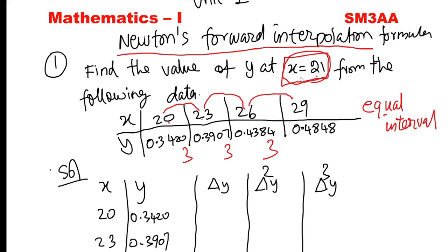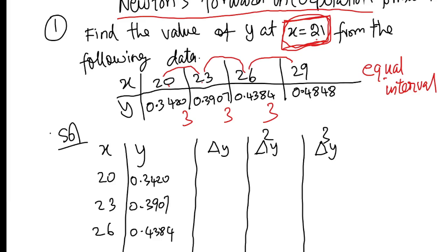Suppose x equals 27 or 28 — that is near the last level of the data, so we would use Newton's backward formula. If the interval is not equal, then we use Lagrange's interpolation formula.